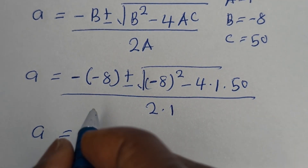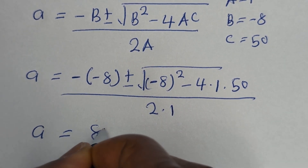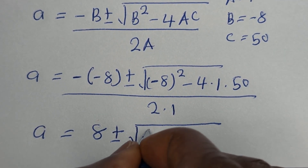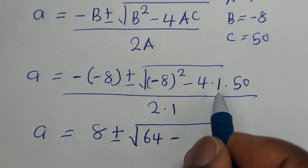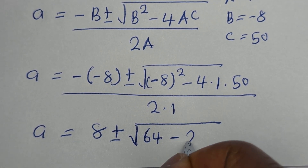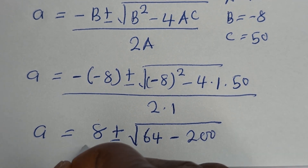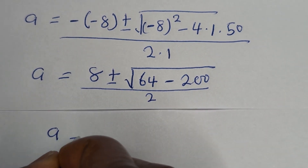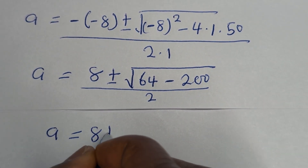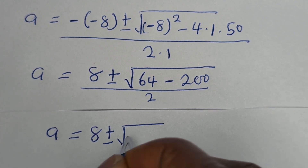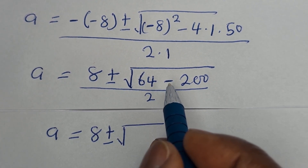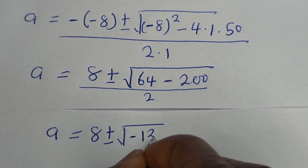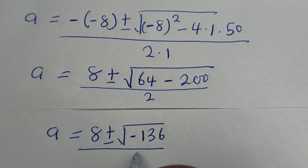A is equal to 8 plus or minus square root of: minus 8 squared — that is 64 — minus 4 multiplied by 1 multiplied by 50, which is 200, over 2 multiplied by 1, which is 2. A is equal to 8 plus or minus square root of 64 minus 200, that is minus 136, over 2.